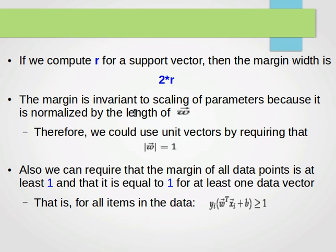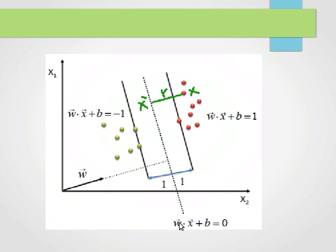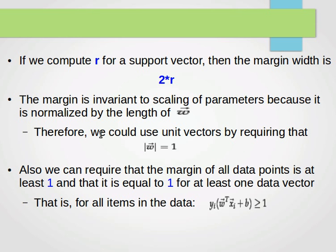The margin is invariant to scaling because it's normalized by the norm of the weight vector. If we multiply the equation by 10, giving 10w·x + 10b = 0, that doesn't actually change the plane. Therefore we could use unit vectors by requiring that the magnitude of w equals one.